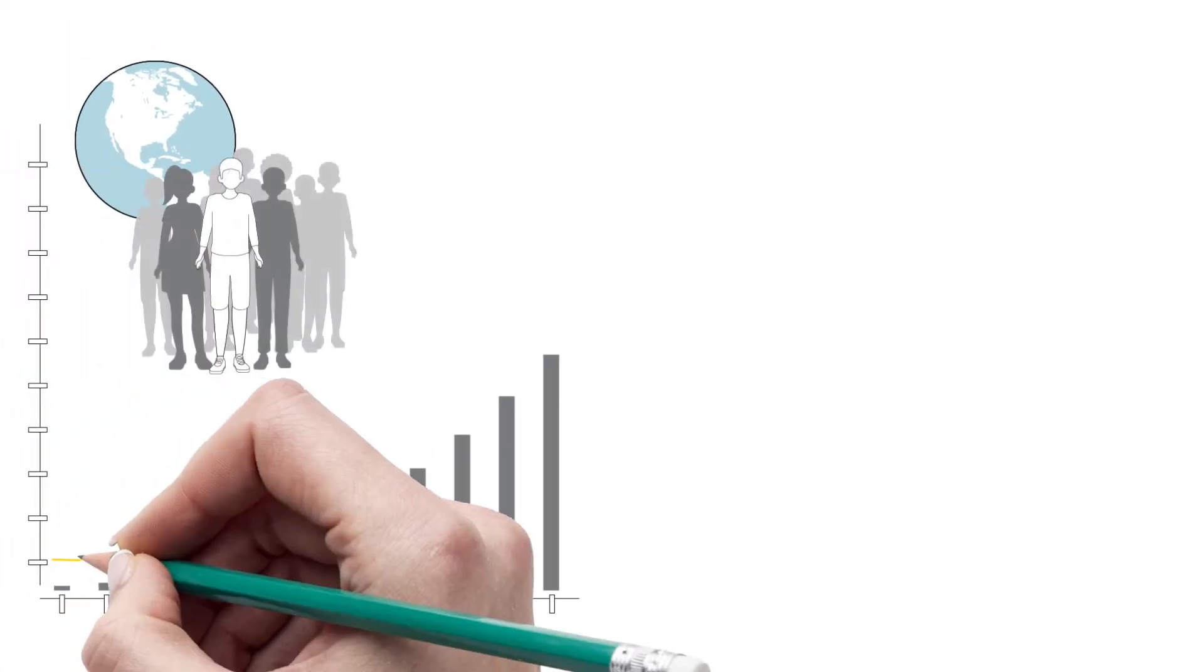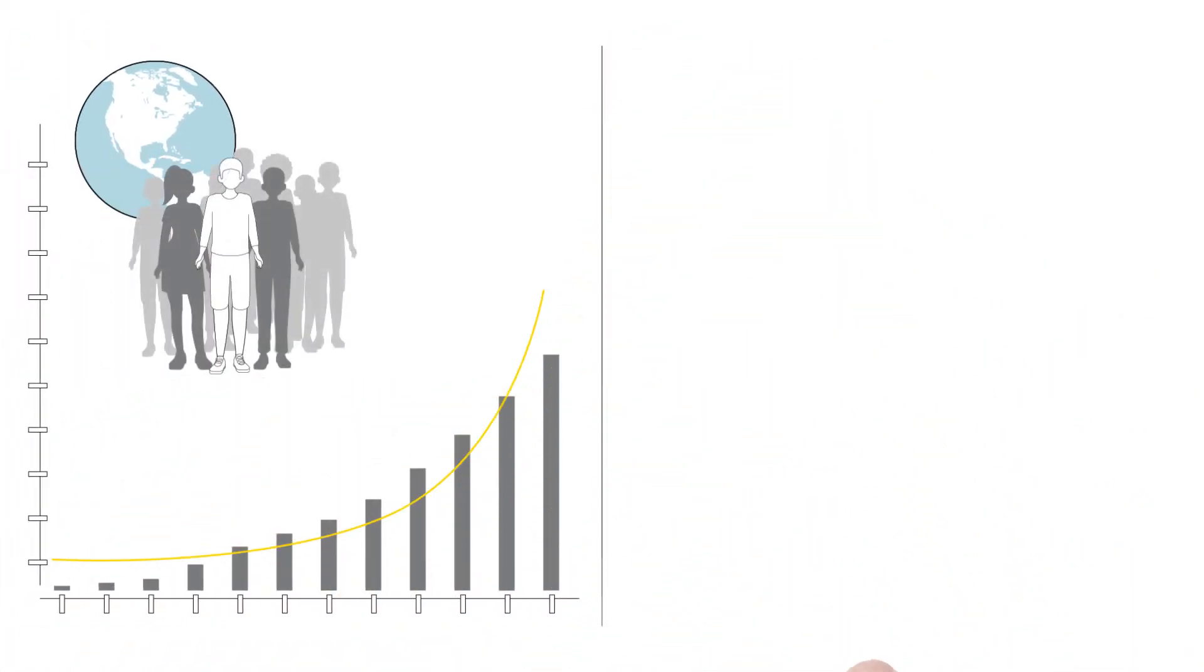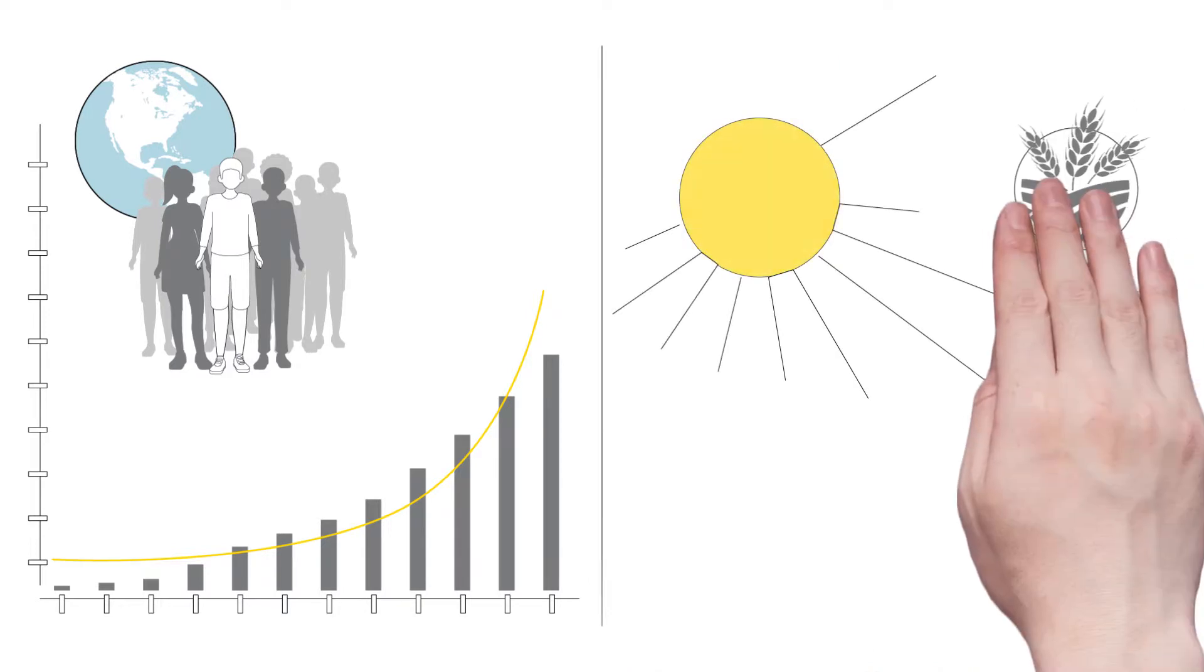The world's population is growing. By 2050, we may have to double the yield of major crops to ensure there is sufficient food for all.